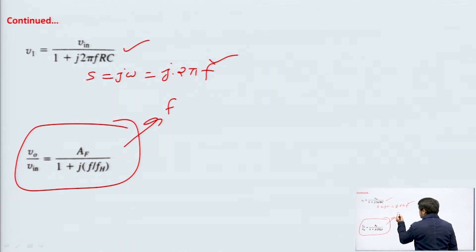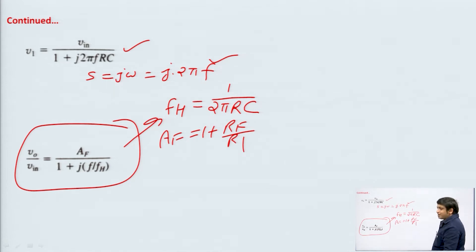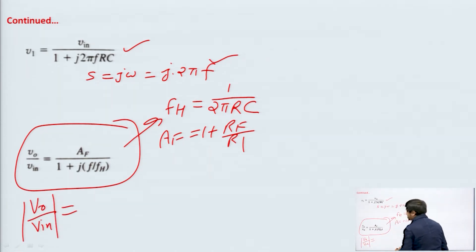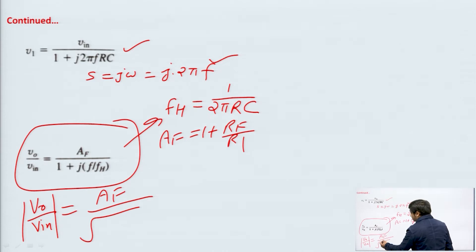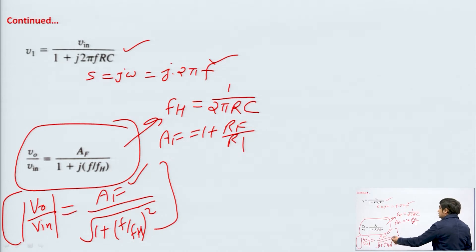What is fH? fH is the cutoff frequency. This cutoff frequency is 1 upon (2πRC). Af is the pass band gain — Af is 1 plus Rf upon R1. After rearranging the terms we get V_out/V_in. We can take the magnitude of V_out/V_in. This voltage gain will be Af upon the square root of (1 + (f/fH)²), since there is a j term — square root of real part squared plus imaginary part squared. This is the voltage gain of the first order low pass filter, where Af is the pass band gain, f is the frequency of the input signal and fH is the cutoff frequency.